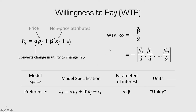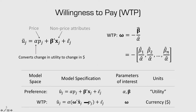Another way to get willingness to pay is to directly estimate it. We can make the substitution up front before estimating a model and then directly estimate the omega parameter. One of the main reasons the logitr package was written was to be able to estimate models in the willingness to pay space.